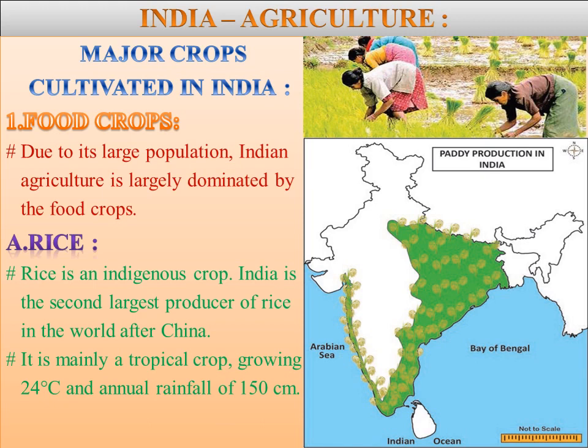Rice in India is sown in three ways: broadcasting, plugging and drilling, and transplanting. Due to the increased use of high yielding variety (HYV) seeds — Jyothi 2005, Irthan 2006, IR 306, and CRR 451, etc. — many of the indigenous varieties have disappeared.